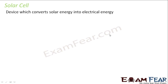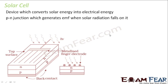Before knowing its working, let us first look at its construction. Basically it has an N-type semiconductor, that is silicon, which is placed above a P-type silicon. P-type silicon is placed above a metal which is known as the back contact. Above the N-type semiconductor we have a metalized finger electrode.